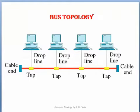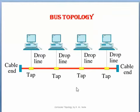In bus topology, all the computers are connected to a single cable. This single cable is responsible for providing network facility. Every single computer is connected to the main cable with the help of a drop line. In bus topology, data transmission is done in one direction.